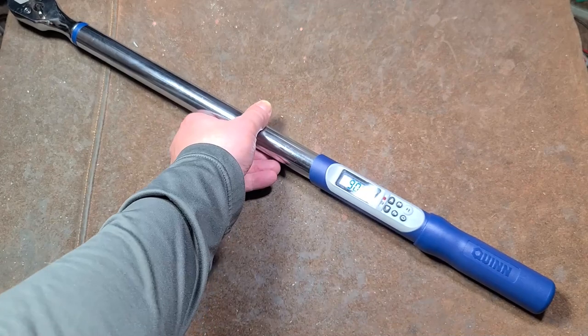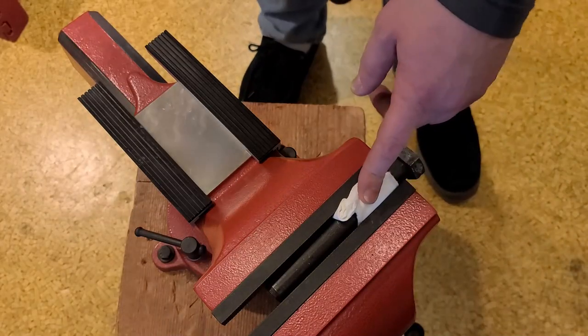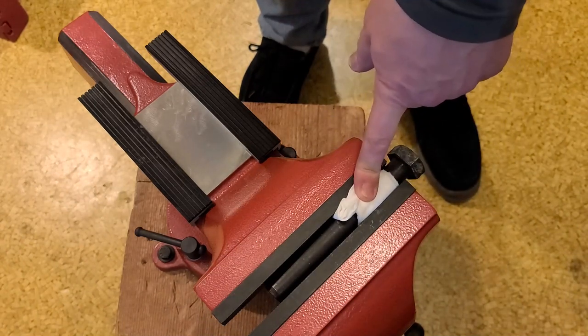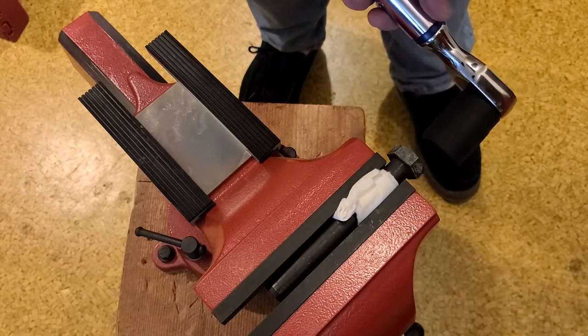Okay, I have a fastener here that has a constant amount of friction on it being viced up like this. I have a paper towel because I don't want to just destroy my brand new jaws with a hardened steel bolt.